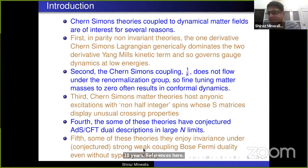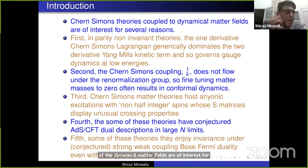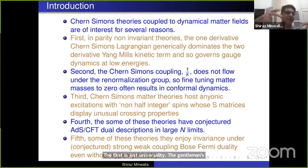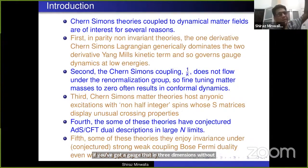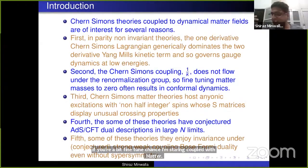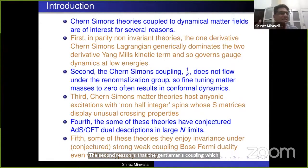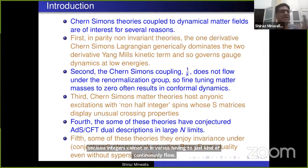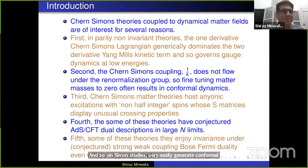Chern-Simons theory coupled to dynamical matter fields is of interest for several reasons. The first is universality. The Chern-Simons action is the most relevant term for gauge dynamics, so if you've got a gauge theory in three dimensions without parity, chances are it will be governed by Chern-Simons action in the far infrared, and if you're a bit fine-tuned, Chern-Simons theory coupled with matter.